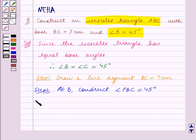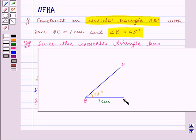Step 3: At C construct angle QCB which is equal to 45 degrees. So at C we have to construct an angle QCB which is equal to 45 degrees. This is angle QCB and it measures 45 degrees.